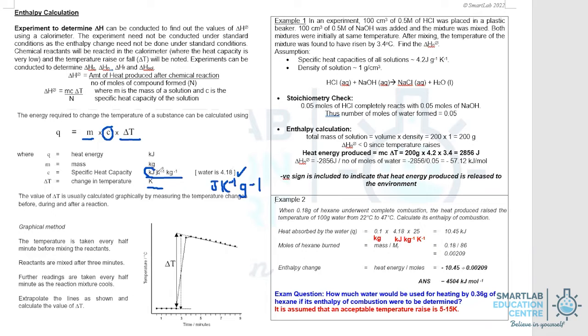If you decide to take kilojoules, then the unit of mass would have to be kilograms. If you decide to use the specific capacity as 4.18 joules per kelvin per gram, then the mass would have to be in grams.